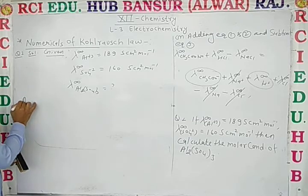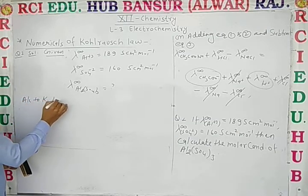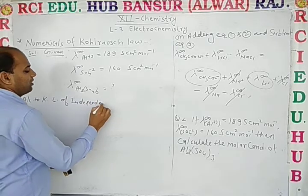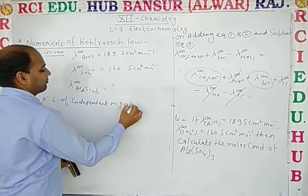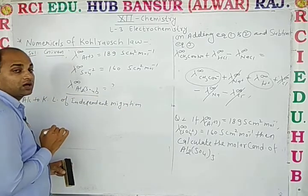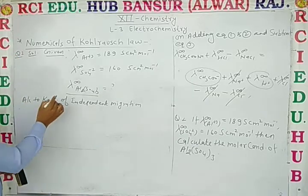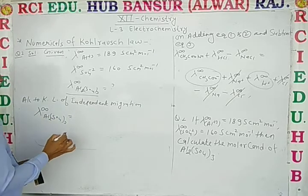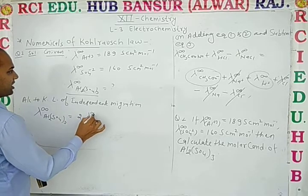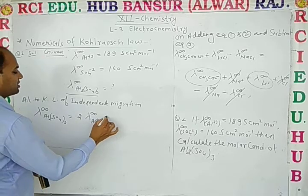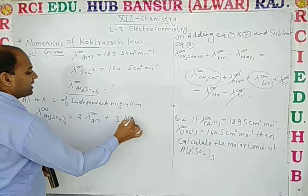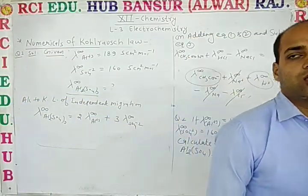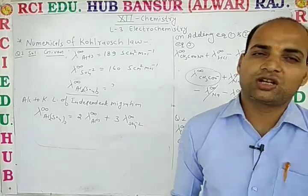According to Kohlrausch's law of independent migration of ions: λ∞(Al₂(SO₄)₃) = 2 × λ∞(Al³⁺) + 3 × λ∞(SO₄²⁻). Note the stoichiometric coefficients — 2 for Al³⁺ and 3 for SO₄²⁻ — as covered in the application part.